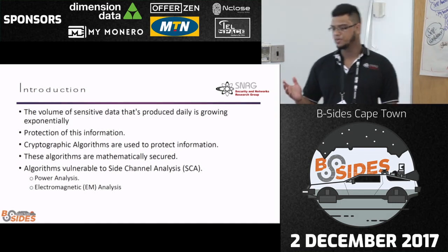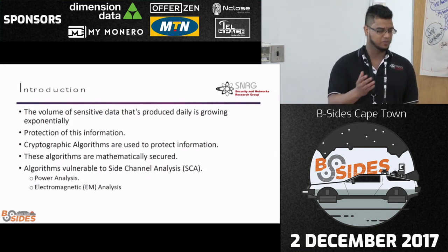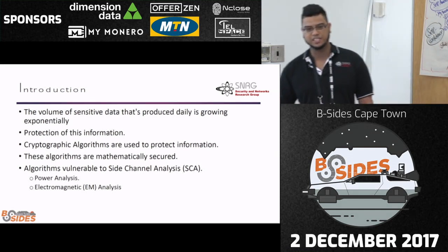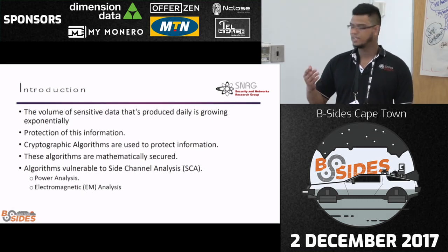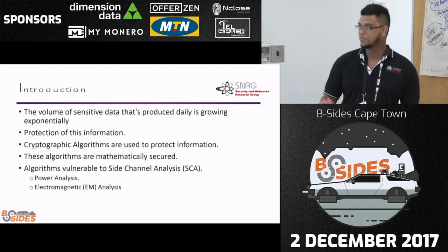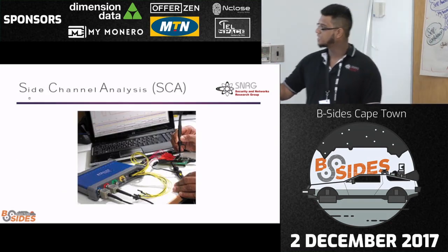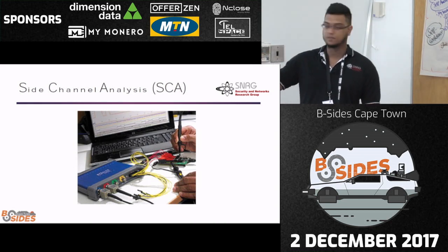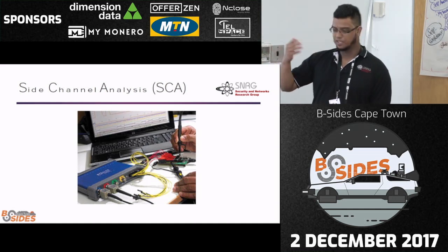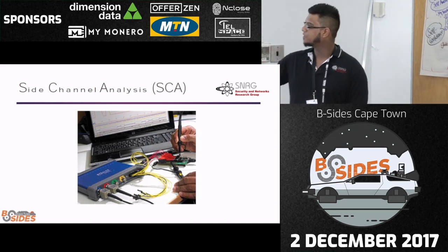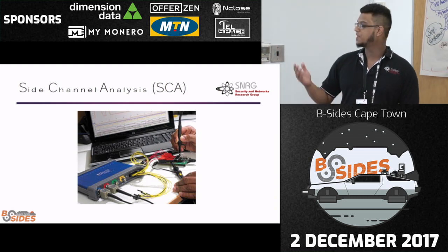Side-channel analysis is basically the study where you monitor the side information of the device that gives a correlation between whatever's happening on the device and the side information. This side information can be power, EM radiation — anything that leaks off from the device. This is an example of power analysis where the adversary can have physical contact to the device and monitors the power waves while the encryption is running.